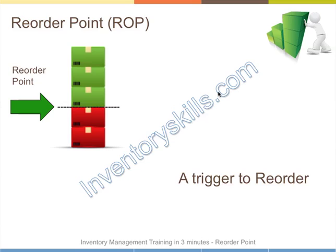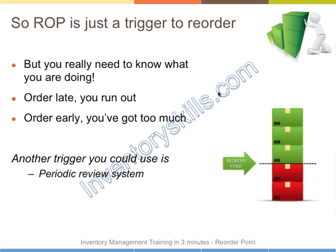So the reorder point is a trigger to reorder, but you really need to know what you're doing in setting that reorder point. If you order late, you'll run out. If you order too early, you'll have too much in stock. Another trigger you might use is periodic review — have a look at one of the other three-minute videos where I explain the use of periodic review.